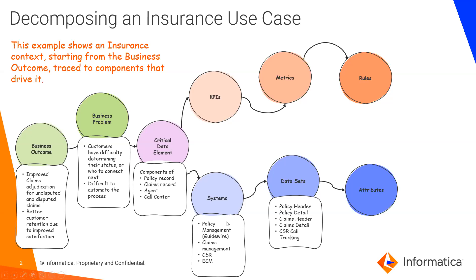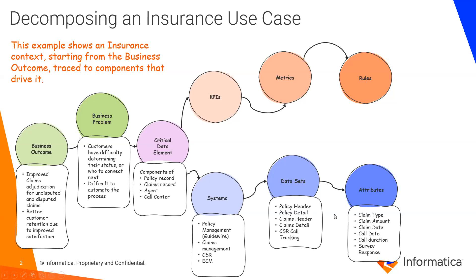The data behind this is going to include lower-level components like the header for the policy and policy details — so maybe your deductible amounts — and then claims header and details. This would be details about when the incident happened, who the other parties were, whether there was a police report, what the claims were, maybe an estimate from a repair shop. All of these things feed into how you're going to solve this claim for the customer.